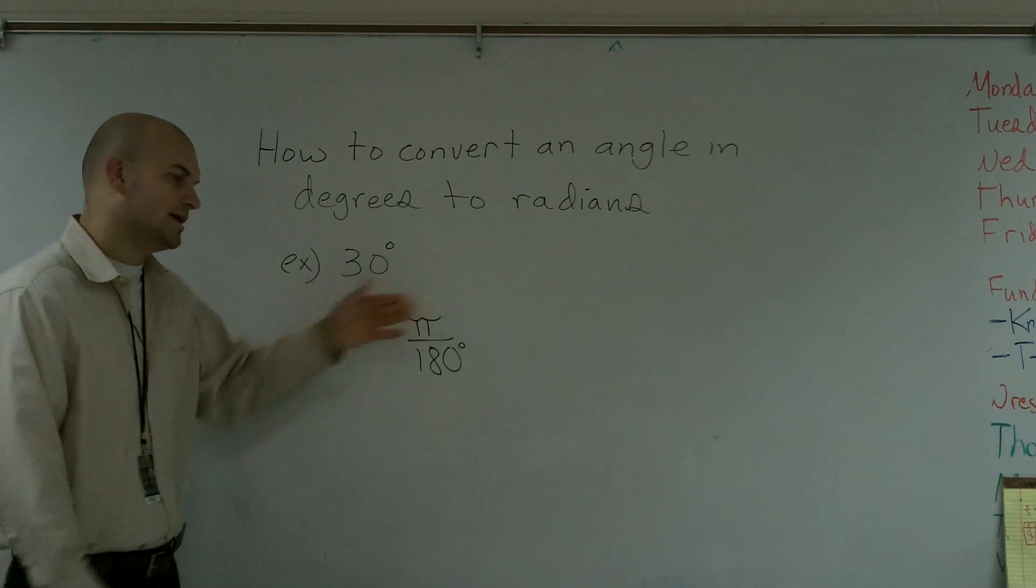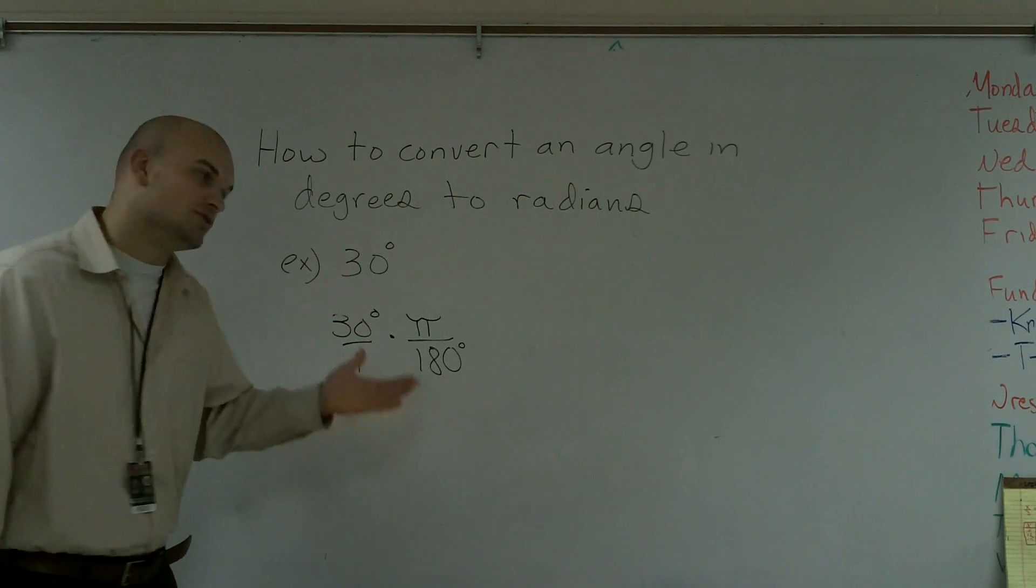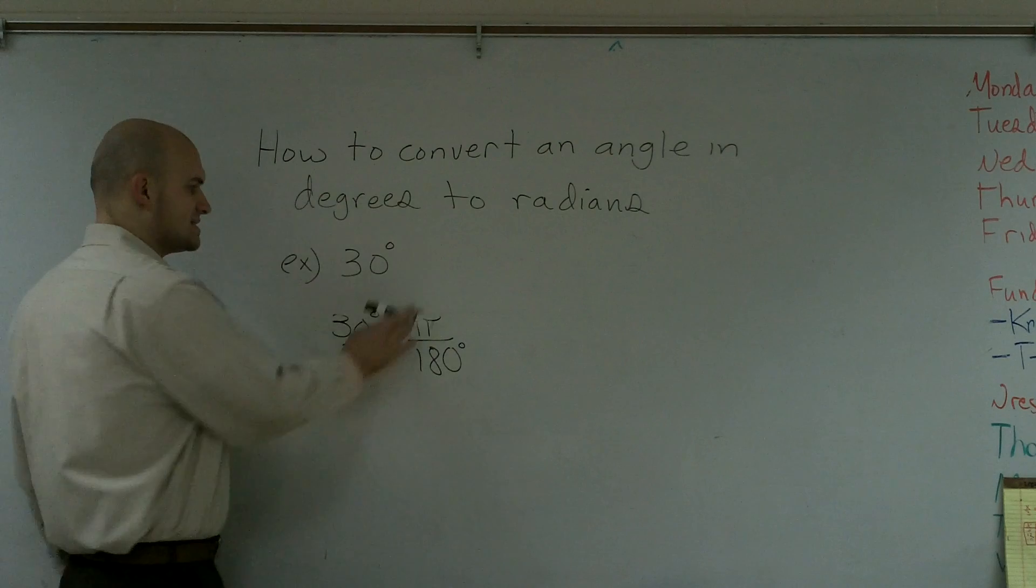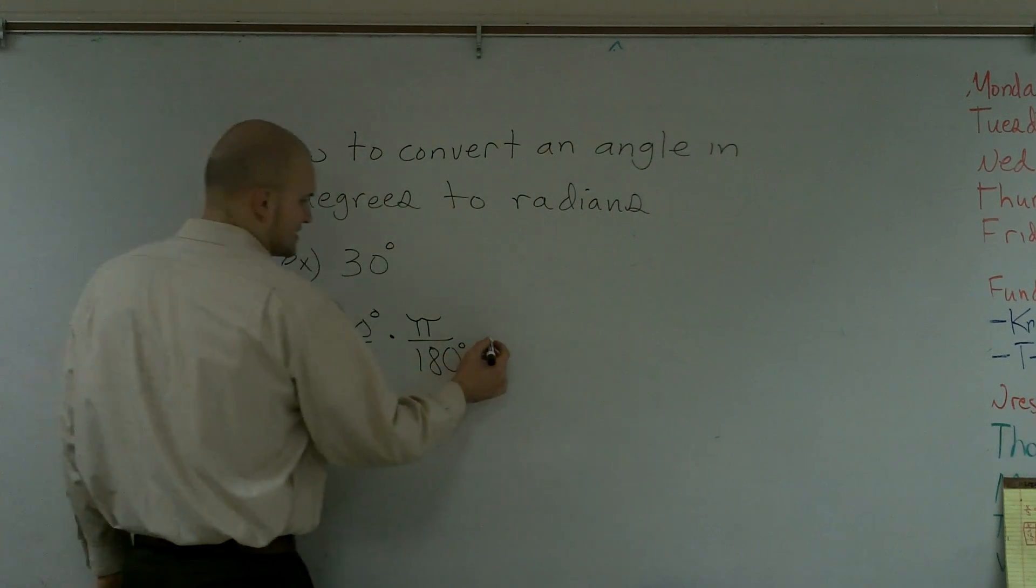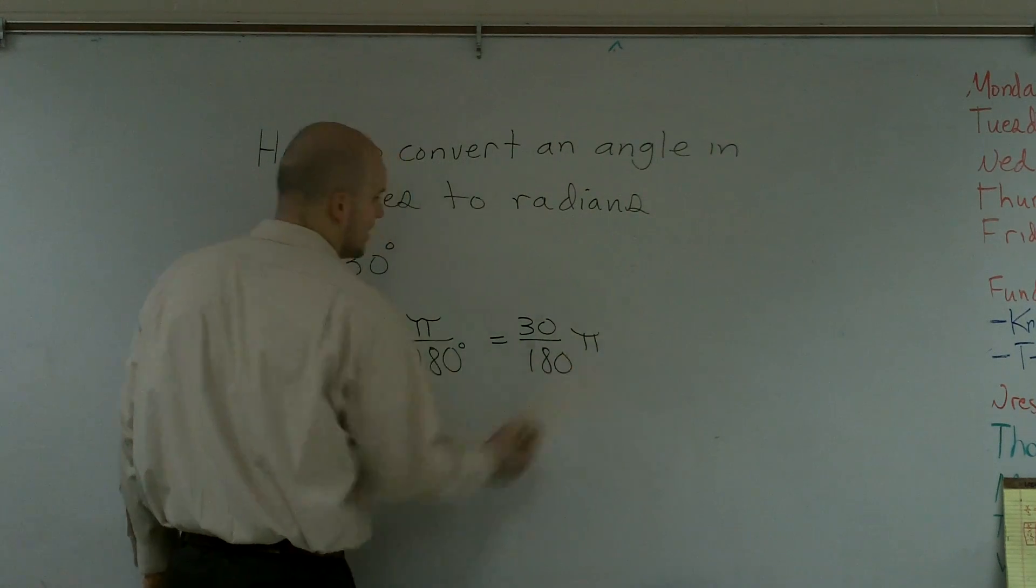So by multiplying this across, I put this as a numerator of 1. What it's going to do is it's going to convert this to radians as a multiple of pi. So therefore, this is simply going to equal 30 over 180 pi.